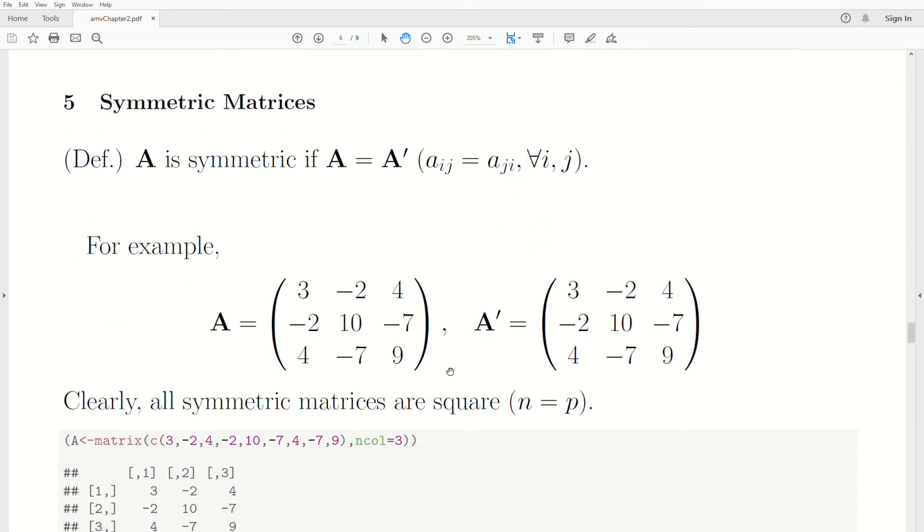So here's an example. These two are symmetric. Notice the first row is equal to the first column. The second row is equal to the second column. The third row is equal to the third column.